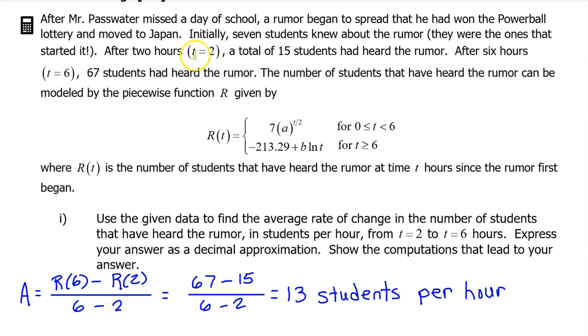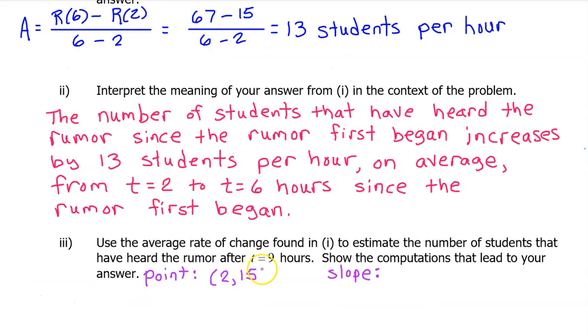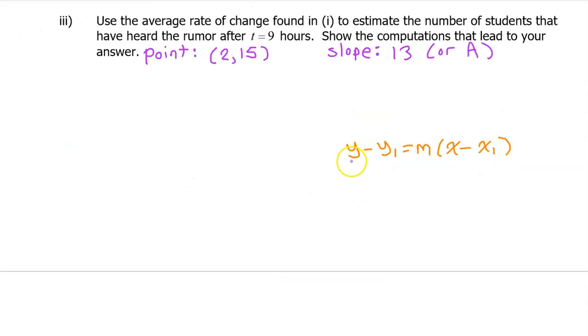For the point, we can use one of the input-output pairs given to us in the setup of the problem. For example, at time t equals 2, 15 students had heard the rumor. So that's the point. For the slope, we can use the average rate of change, which is 13. Or if this was some long decimal, we could use the letter A, where we stored the value of the decimal. Now, we can write the equation of the secant line in point-slope form.